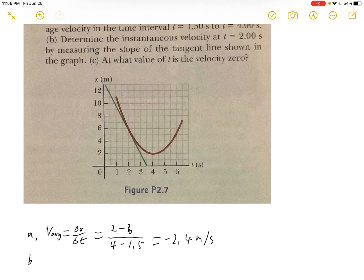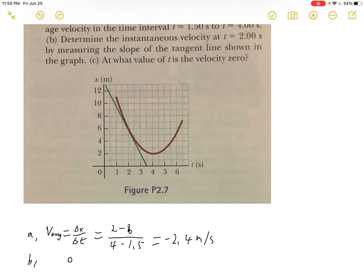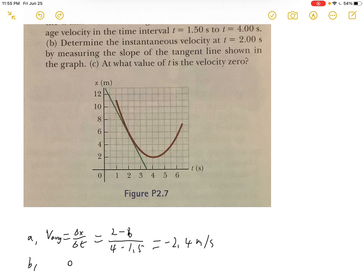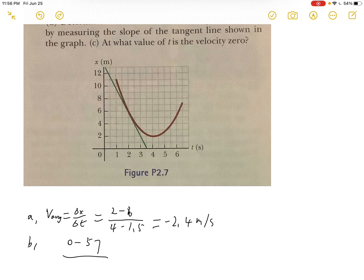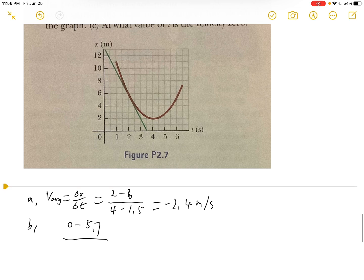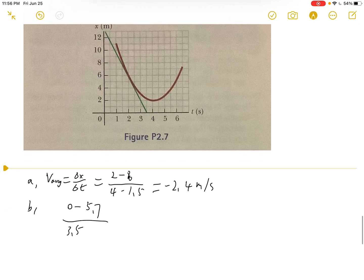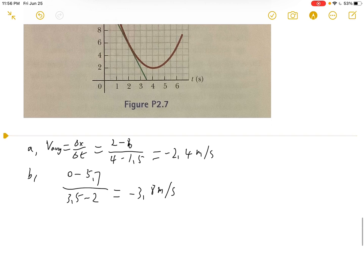So it will be x at 3.5, which is 0, minus x at 2, which is about 5.7, over 3.5 minus 2. This gives us negative 3.8 meters per second.